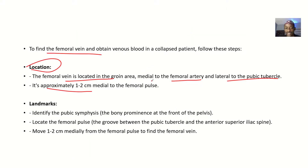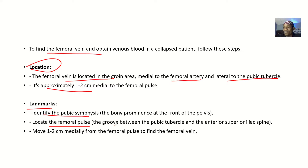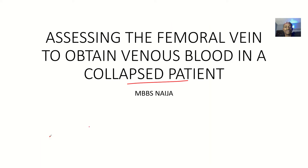The landmarks used to locate the femoral vein are: identify the pubic symphysis, the bony prominence at the front of the pelvis — the femoral vein is just lateral to it. Alternatively, locate the femoral pulse (femoral artery), then move one to two centimeters medially. Once you feel the next vessel there, you have found the femoral vein. That is how to access the femoral vein to obtain venous blood in a collapsed patient.